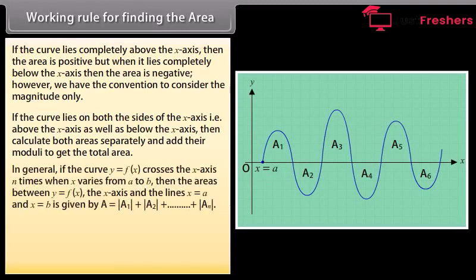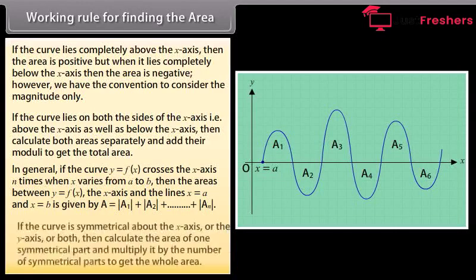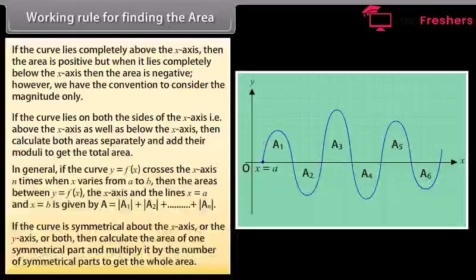In general, if the curve y = f(x) crosses the x-axis n times when x varies from A to B, then the area between y = f(x), the x-axis, and the lines x = a and x = b is given by A = |A₁| + |A₂| + ... + |Aₙ|. If the curve is symmetrical about the x-axis, y-axis, or both, then calculate the area of one symmetrical part and multiply it by the number of symmetrical parts to get the whole area.